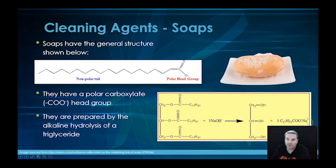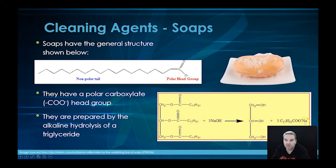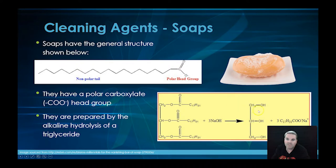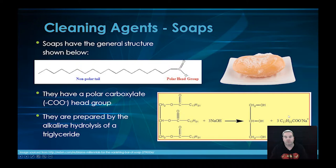The benefit of having the sodium ion is that it makes the soap water soluble, because you've got a really long carbon chain. You need a polar head group with the sodium in it to make it water soluble. The non-polar tail is what will be attracted to the grease and oil, while the polar head is attracted to the water by ion-dipole interactions. To go from this to commercial soap, they add fragrances, colour and moisturiser — a number of things to make the soap more appealing.